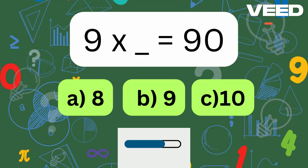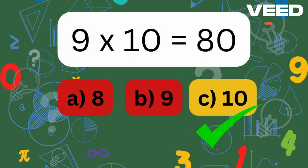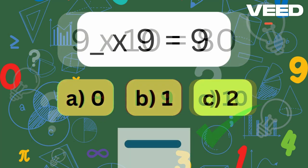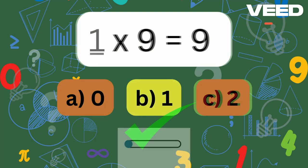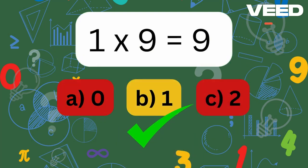9 times what is 90? 9 times 10 is equal to 90. What times 9 is 9? 1 times 9 is equal to 9.